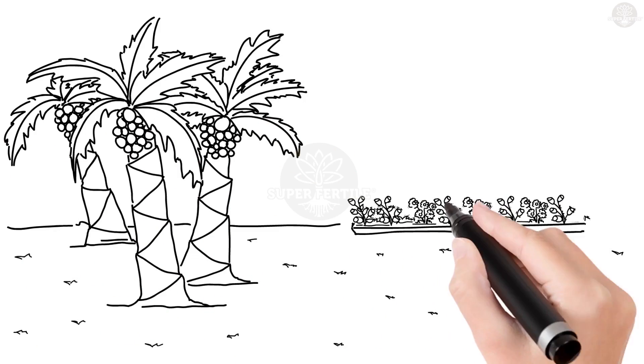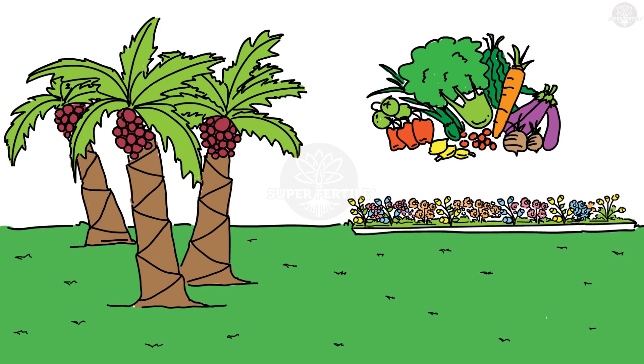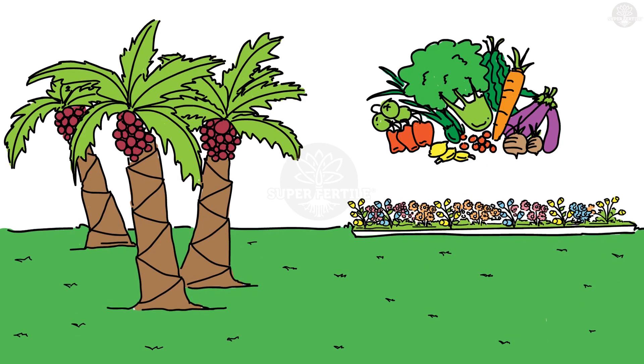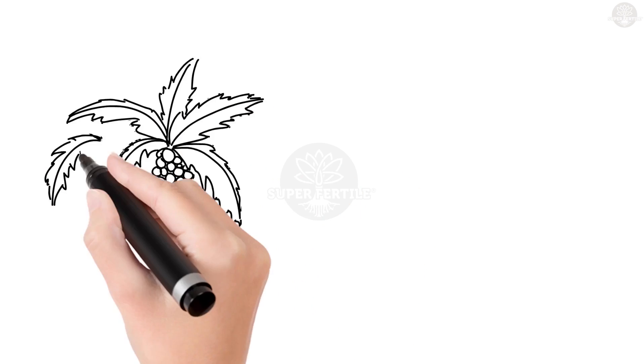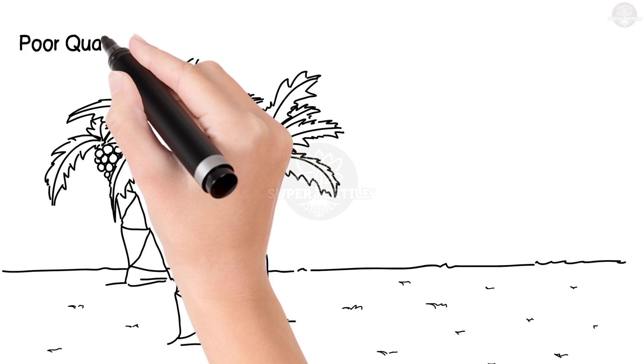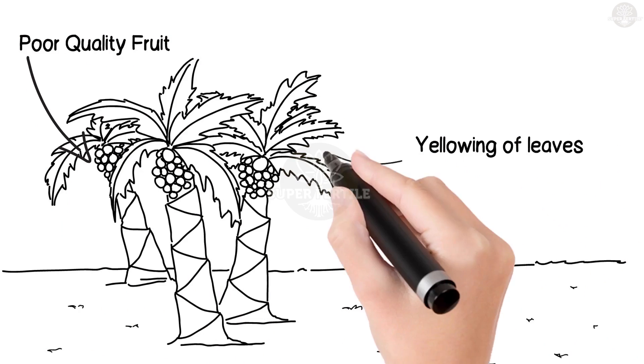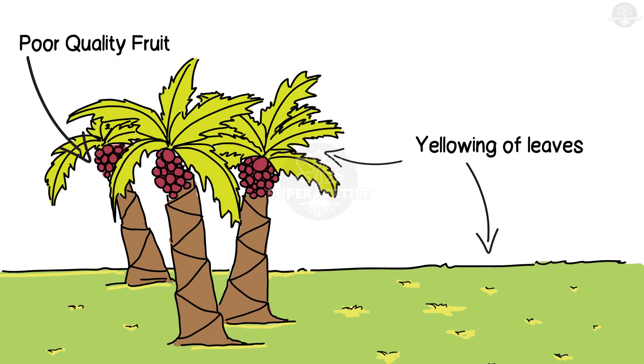When you are looking after your plants, what you don't see is as important as what you do see. You notice your plants do not grow well despite giving them the right nutrients. Why? That depends on your soil's pH.